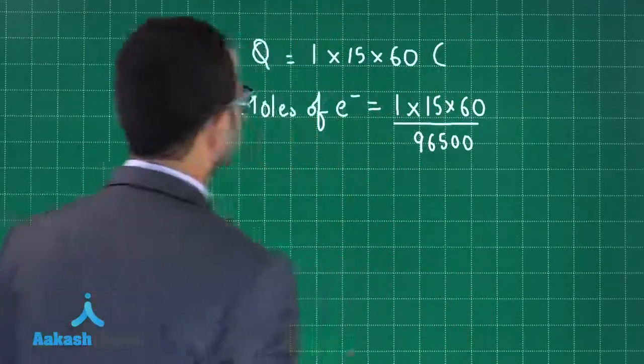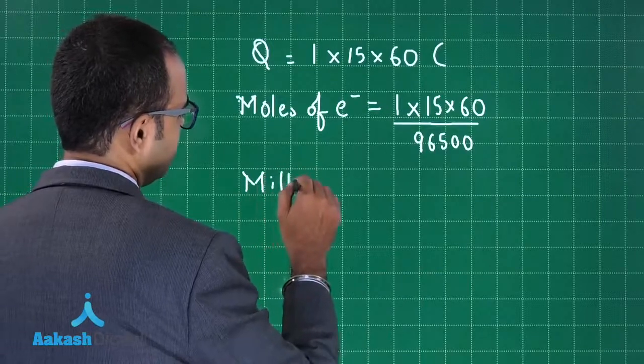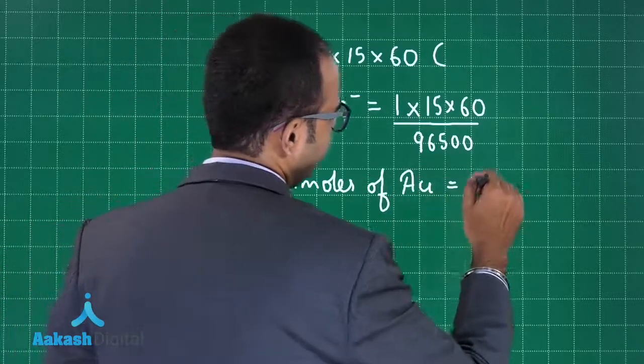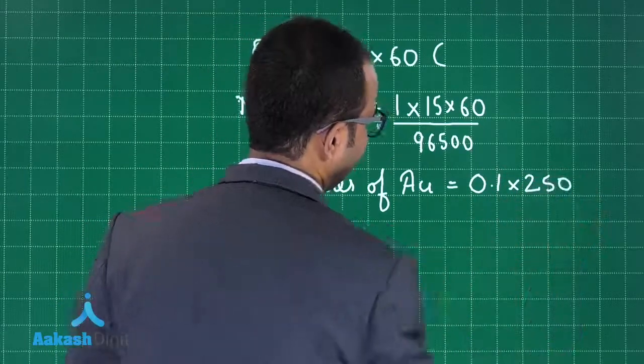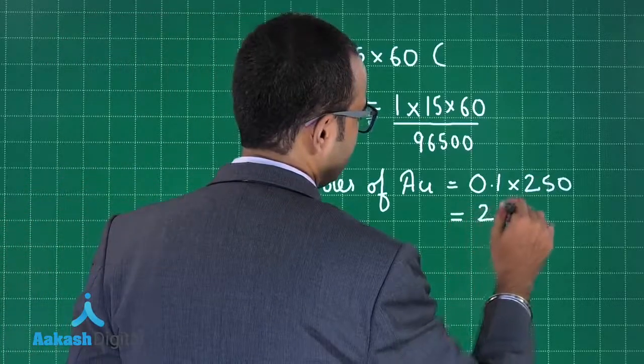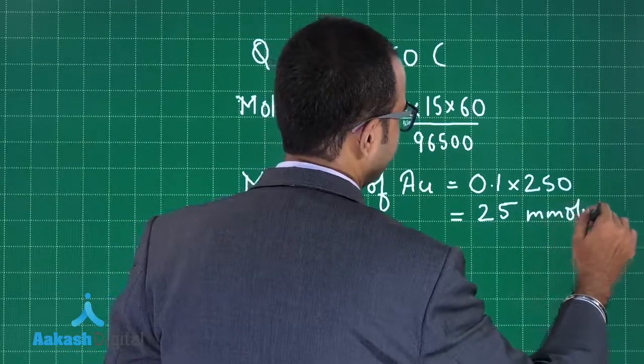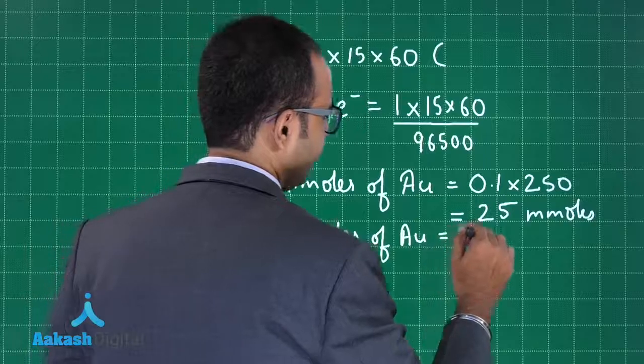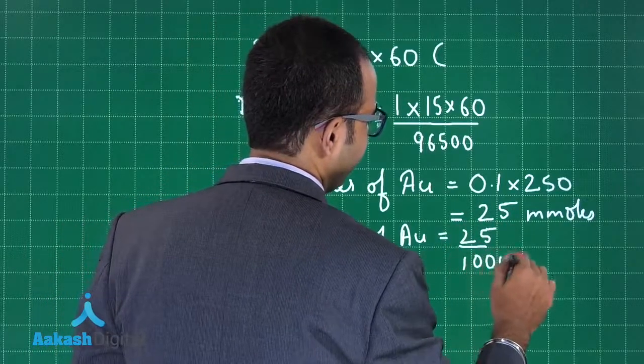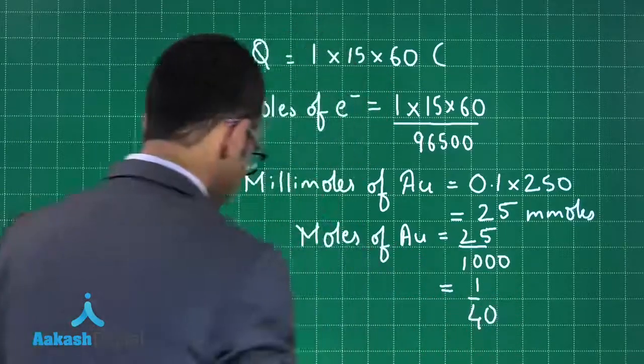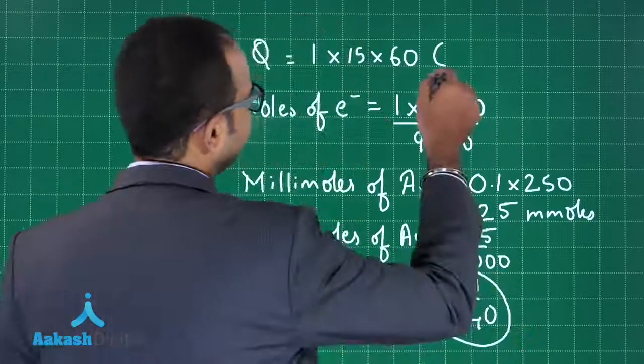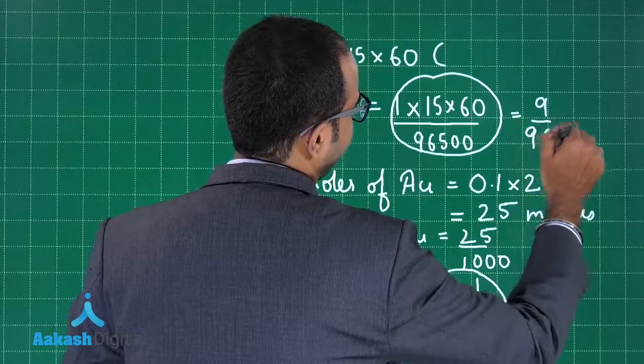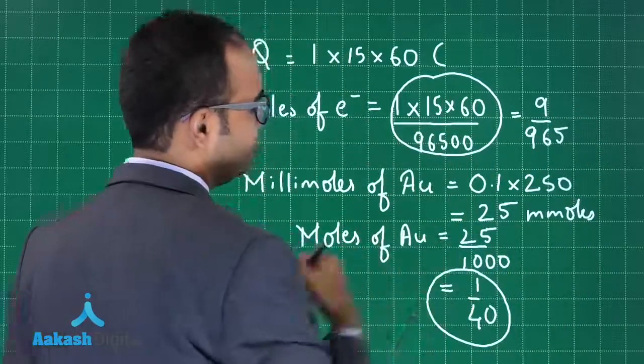Let us check the moles of Au. Let us first calculate the millimoles. Millimoles of Au would be equal to 0.1 into 250, so that is 25 millimoles. So moles of Au would be 25 divided by 1000, that is 1 by 40. We have the moles of Au and we have the moles of electrons that we are passing. This will be 9 upon 965.